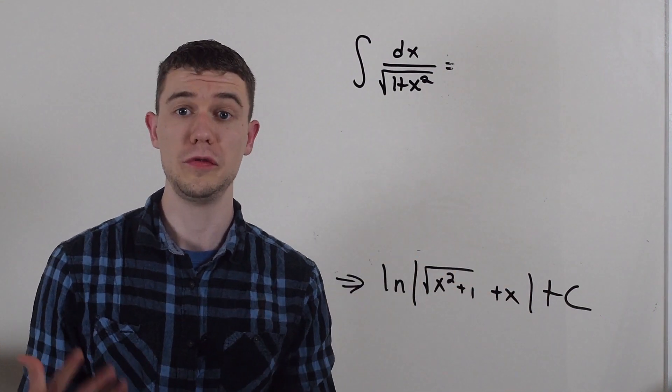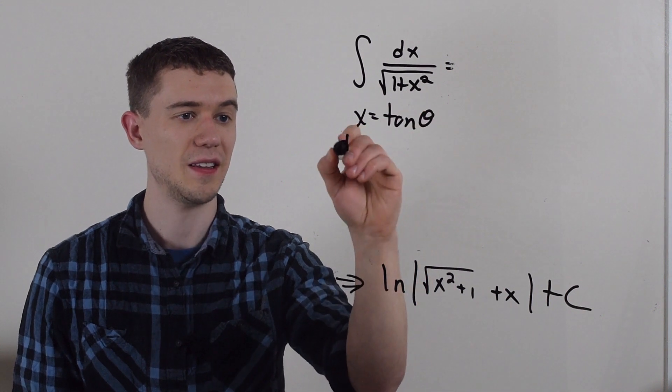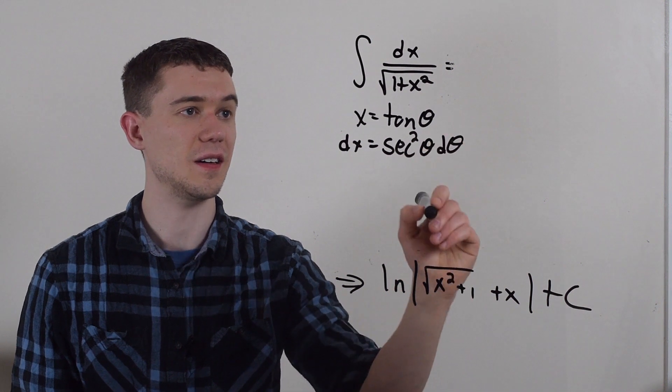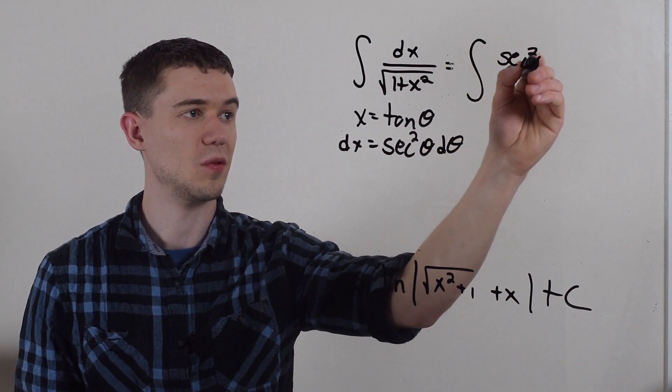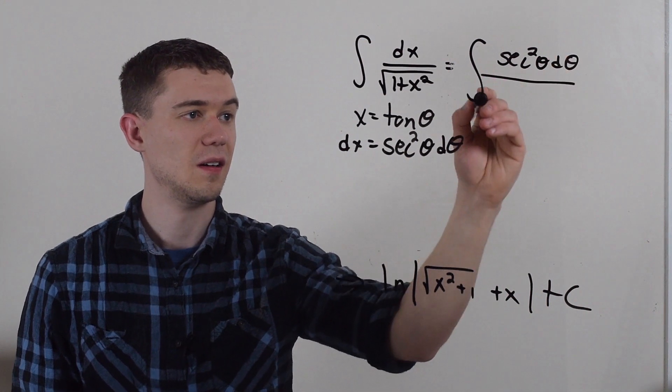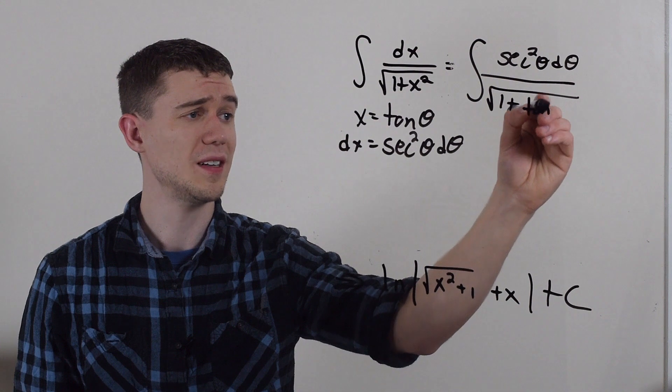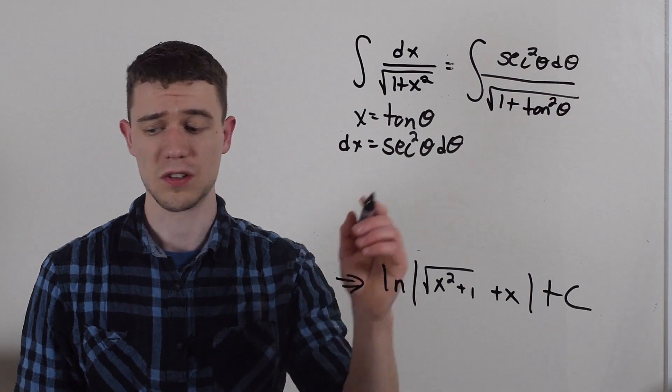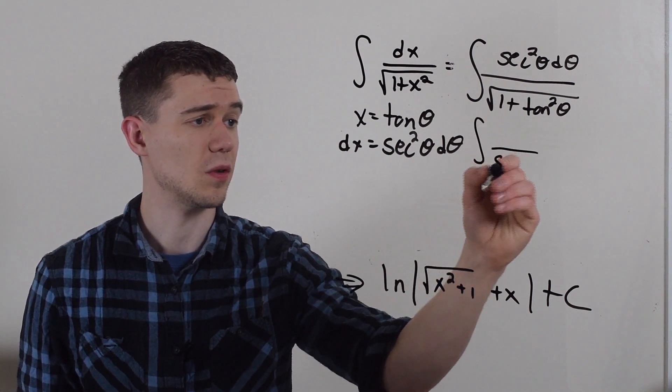So if you do use trig sub, the standard way to do this would be let x equal tangent theta. That would make dx the derivative sec squared theta d theta. That would make this integral dx on top sec squared theta d theta. In the denominator I'd have 1 plus x squared. That's 1 plus tangent squared theta. 1 plus tangent squared theta is secant squared theta.